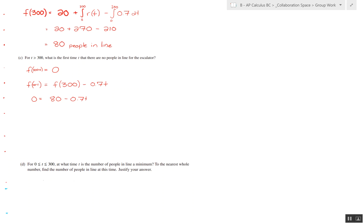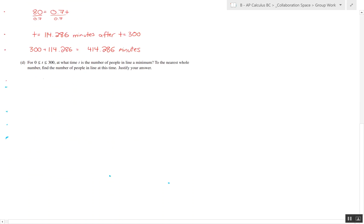So we just have to equal this equation to zero, which once we simplify it, we have t equals 114.286 minutes after t equals 300, which is equal to 414.286 minutes as our t value.